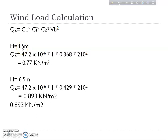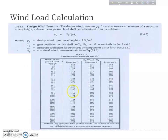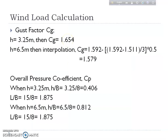For height 3.25 meters: QZ = 47.2 × 10⁻⁶ × 1 × 0.368 × 210² = 0.77 kN/m². For height 6.5 meters, the formula is the same but CZ = 0.429, giving QZ = 0.893 kN/m². Now we proceed to calculate the design wind pressure PZ, which is the final determination of the problem.